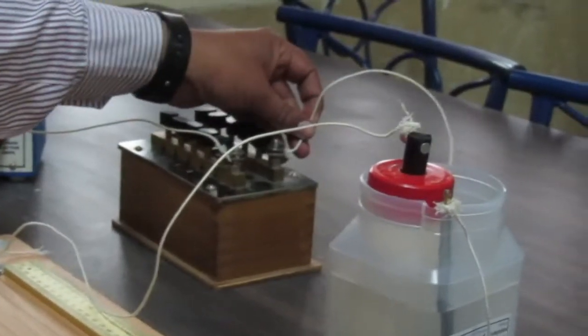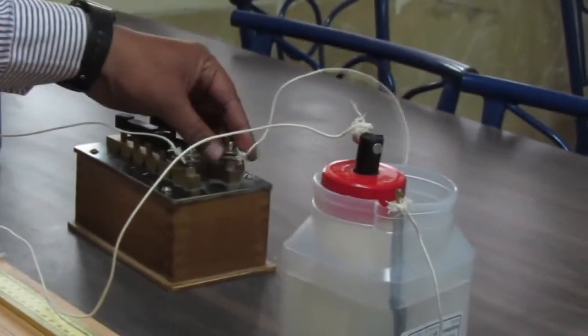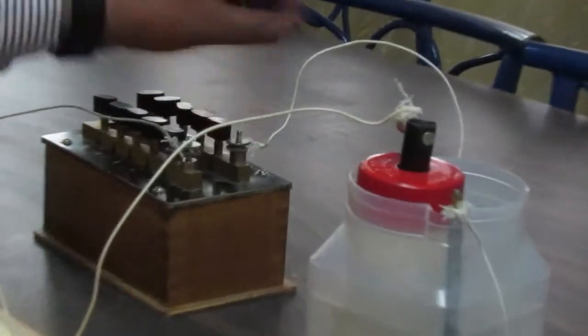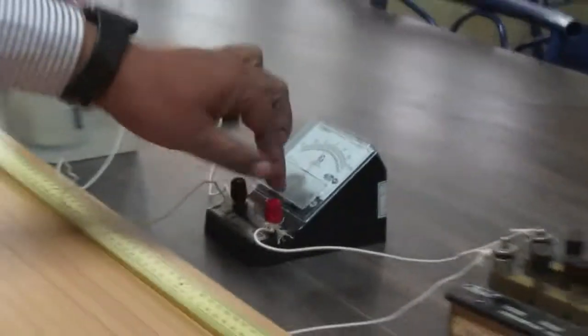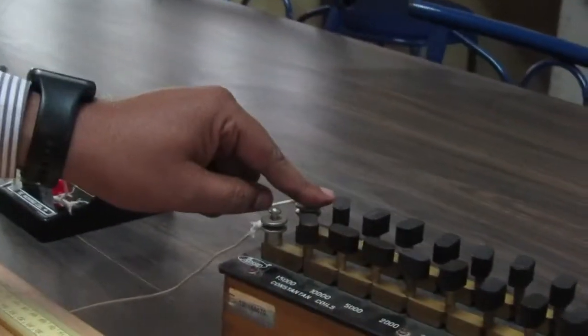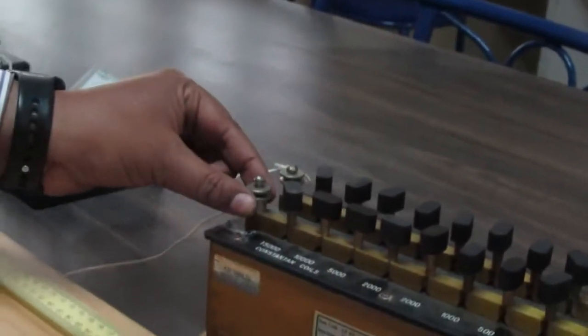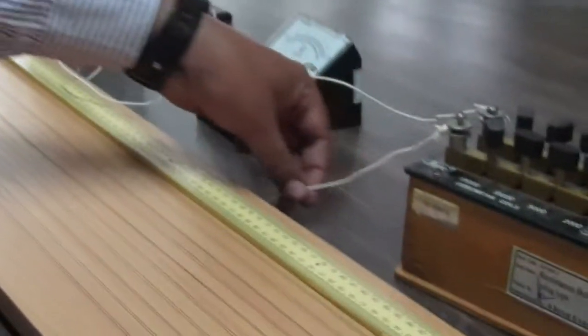The second end of resistance box is connected to the key and then connected to the negative end. Again, the positive end is connected to the resistance box and the resistance box is connected to the jockey.